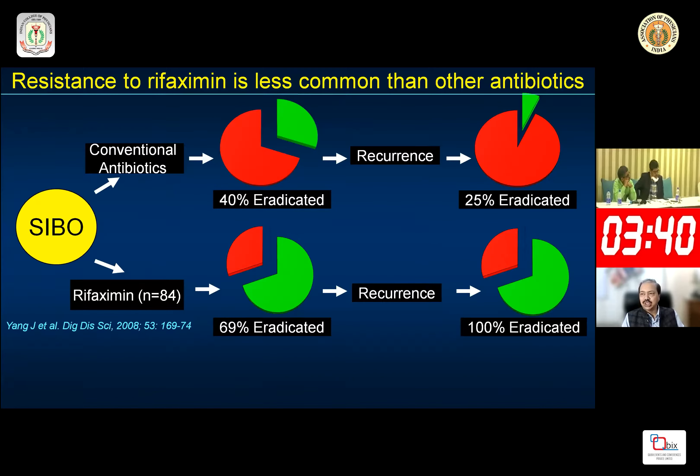In conclusion: SIBO is not uncommon in IBS — almost one-third of IBS patients have SIBO. Sixty percent of IBS patients may have associated functional dyspepsia, and SIBO also occurs in functional dyspepsia. The glucose hydrogen breath test is currently the preferred non-invasive test to diagnose SIBO, though the gold standard is culture. Rifaximin, being a gut-specific antibiotic, is the treatment of choice. Recurrence is common after successful treatment but can be managed with repeat rifaximin or prevented with prokinetics that stimulate small bowel motility.